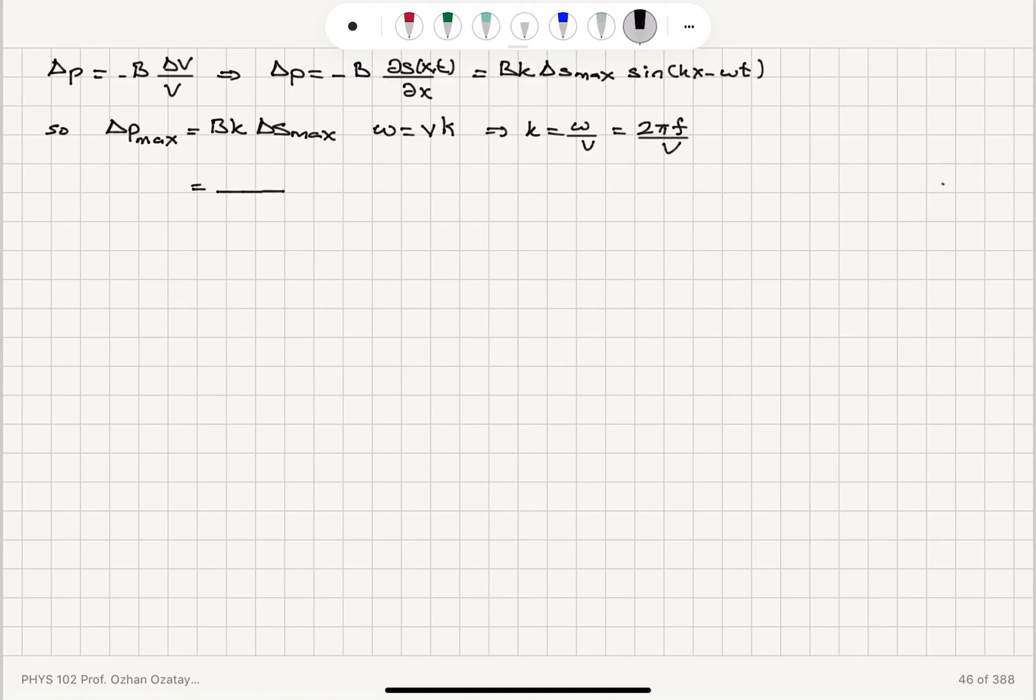So we can substitute that here. Delta P max is equal to B bulk modulus times 2 pi frequency divided by propagation speed V times delta S max.